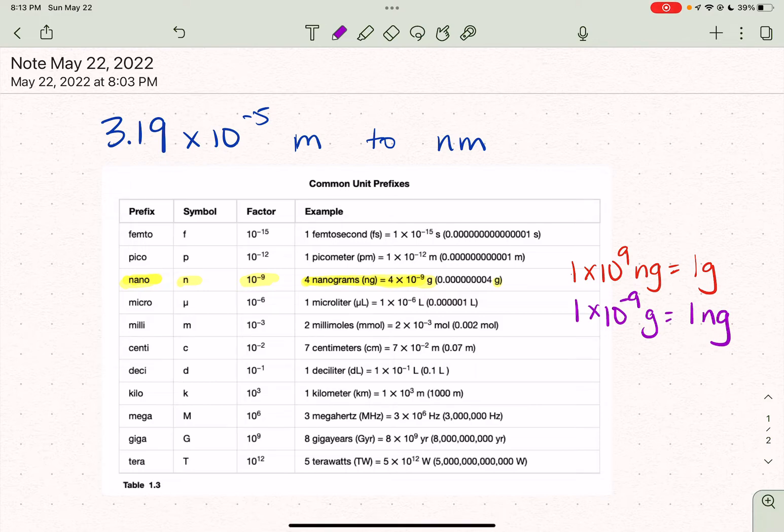So nano is 10 to the minus 9. So if you put this into terms of grams, then 1 times 10 to the minus 9 grams equals 1 nanogram. So let's do this in two different ways to show you how to do it.